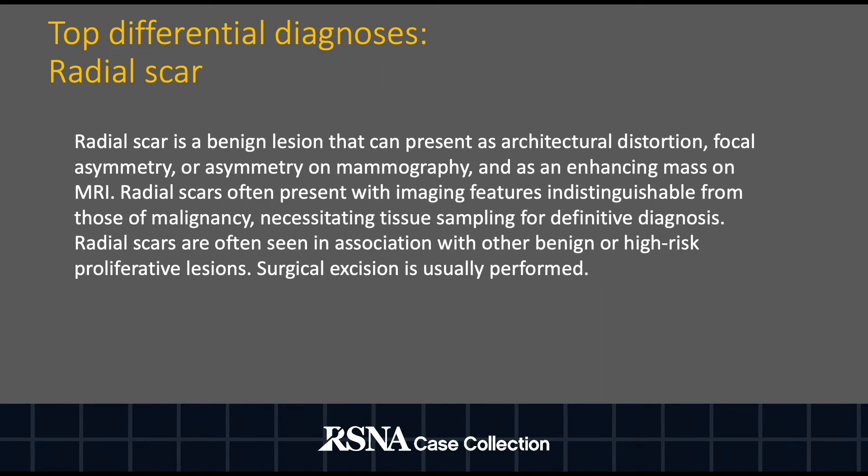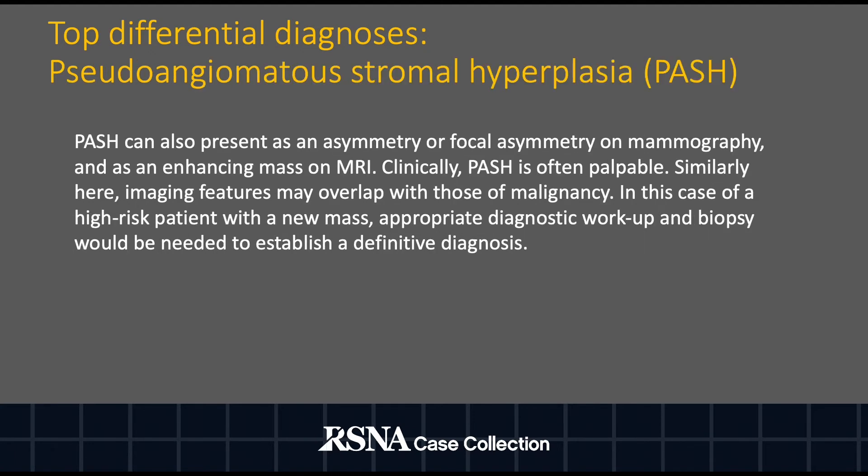Radial scars are another mimicker of malignancy in the breast, most often presenting as architectural distortion with or without enhancement on MRI. Finally, PASH can present as an enhancing mass on MRI and does share imaging features that overlap with those of malignancy.